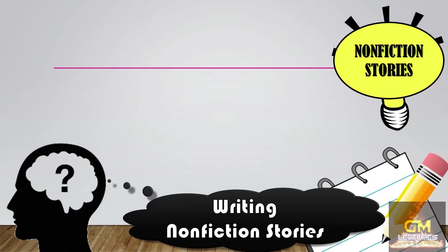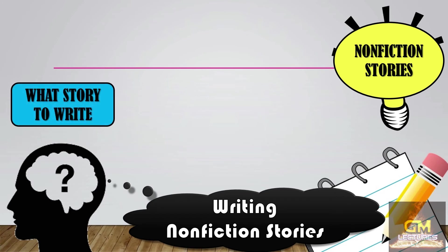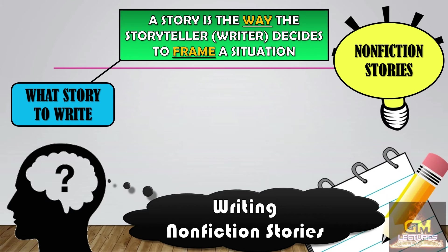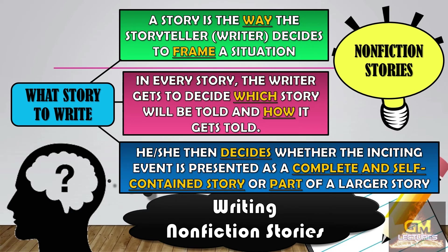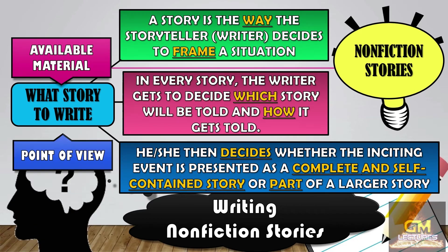Now that we know what an inciting event is, as well as how to look for a story, the next step in writing non-fiction stories is identifying what story to write. It is worth noting that a story is the way that a storyteller or writer decides how to frame a situation. In every story, the writer gets to decide which story will be told and how it gets told. When identifying what story to write, we have to consider at least two factors: the available material and the point of view.